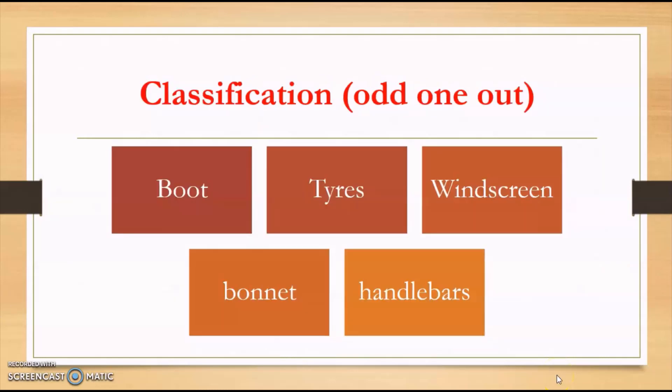One of the questions can be formed on classification. Classification means how you categorize things or how you classify things. For example, there are five words on my screen right now. Four of the words relate to one thing and the fifth word doesn't go with the same thing. Boot is the backside, the rear part of the car, which you call trunk. Tyres, again related to car. Windscreen, again related to car. Bonnet is the front part of the car. But the fifth one here, handlebars, has nothing to do with cars. It is related to either bike or bicycle. So handlebars is the odd one out.